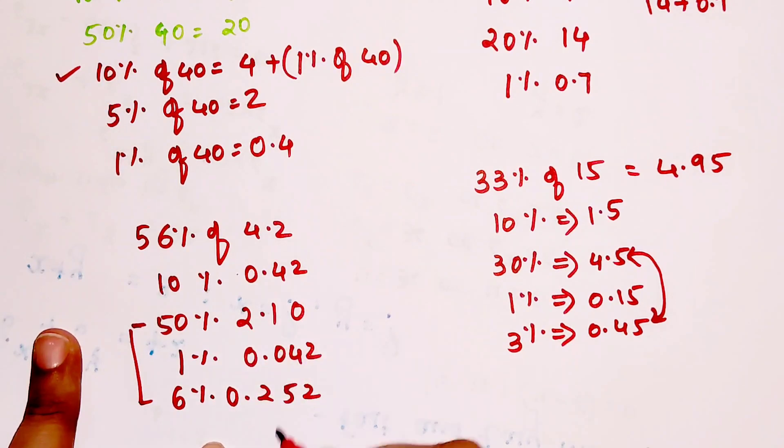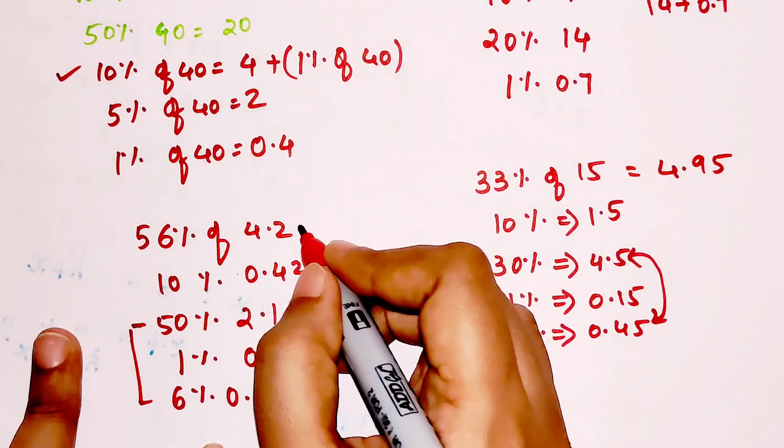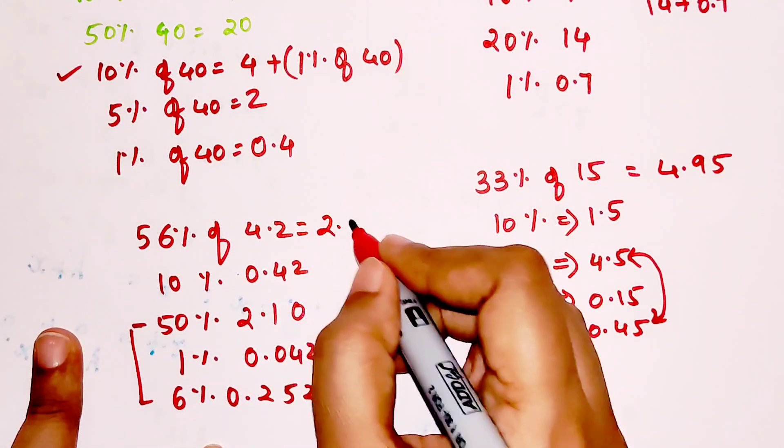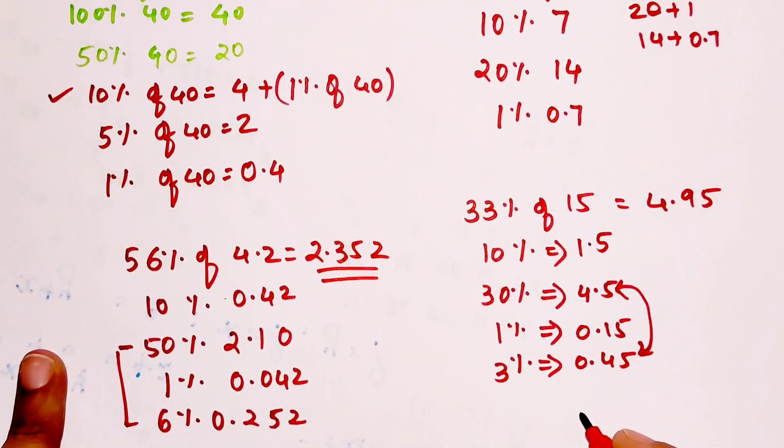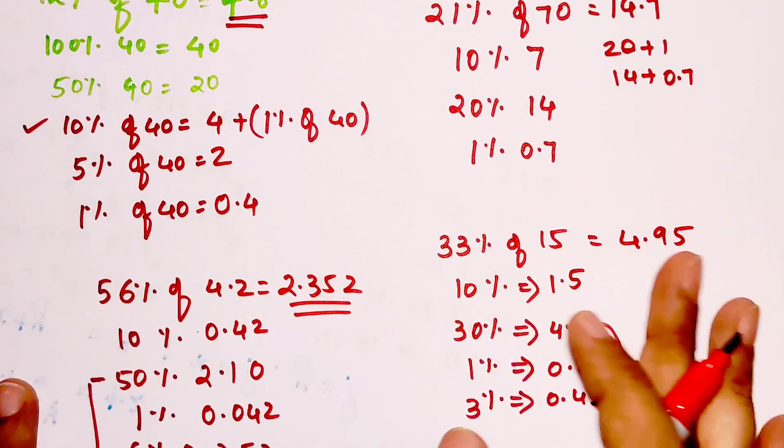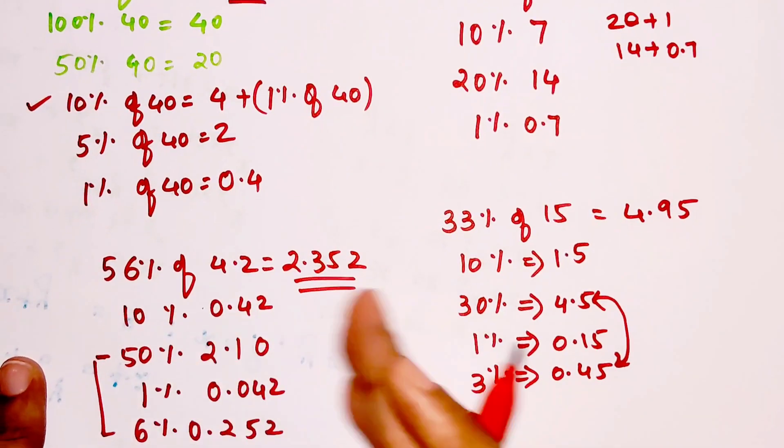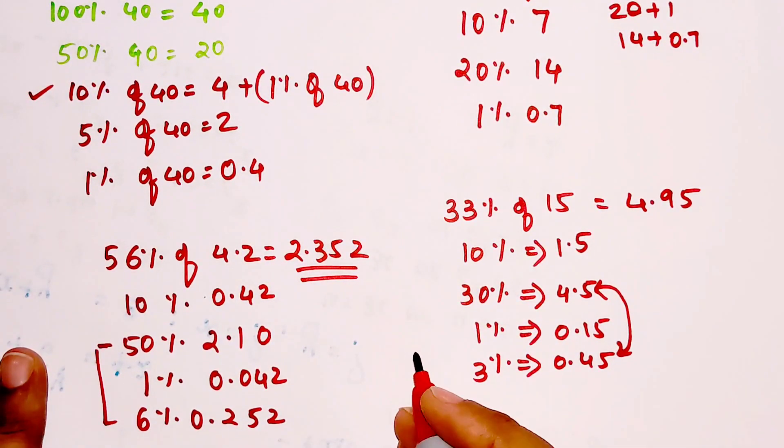So now you want 50 and 6, so basically you have to add 2.1 plus 0.252, so that would be 2.352. So you saw how easily this trick is working for anything, literally it is working for numbers in decimal as well.